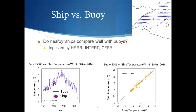If you look at the chart on the left, you'll see a time series plot of the ship and buoy temperatures, where the ships are the dots and the buoy is the line. There's fairly close agreement between the two. On the right, you'll also see a one-to-one relationship plot between ship temperature and buoy temperature. The ship and buoy temperatures fall along that line, indicating a close relationship. The root mean square error was less than a degree, so we were pretty confident that there was good agreement between ships and buoys for air temperature.